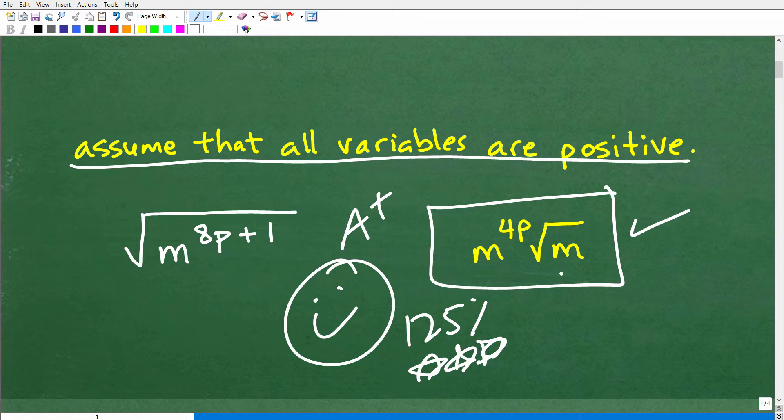Now, if you got something kind of close to this, well, close is not 100%, right? You want to get this 100% correct. So what's holding you back in order to simplify from this to this? Well, let me show you how to do this problem.